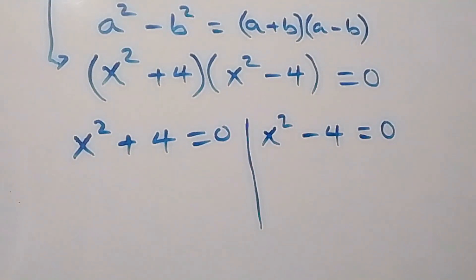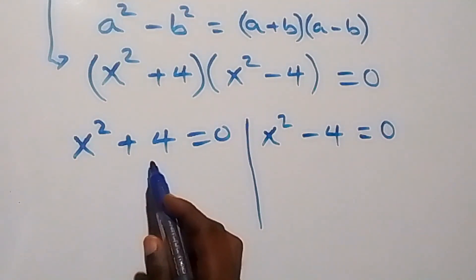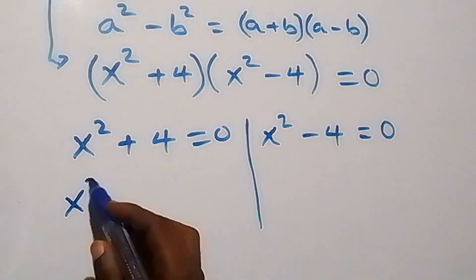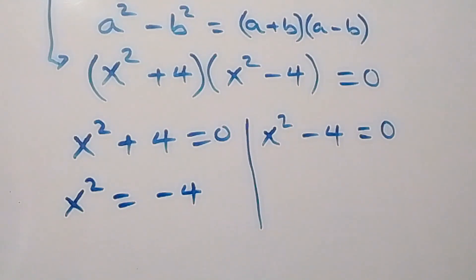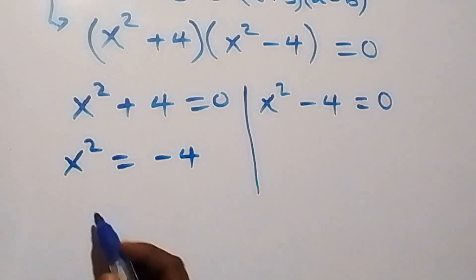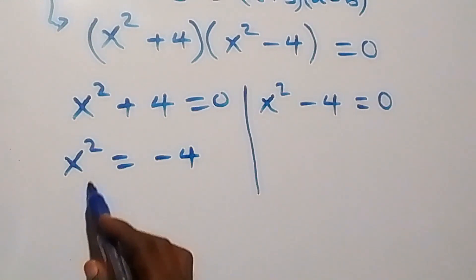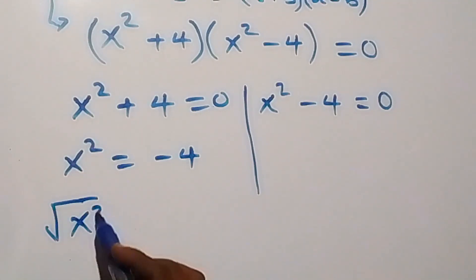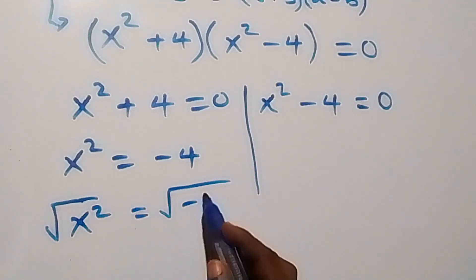If you are enjoying this class, please give it a thumbs up and subscribe to my channel. On this side, let's take 4 to this side — it becomes minus — and we have x squared equals to minus 4. To remove the square, we take square roots on both sides: square root of x squared equals square root of minus 4.